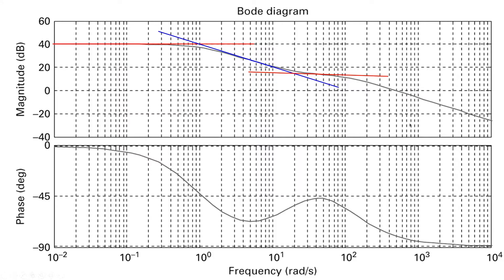For the next break frequency, there is a region with a very constant slope where a tangent line is easy to place. The blue and red lines make a new intersection point at approximately 10 to the power 2, which is 100 radians per second. This is again a pole — it causes the gain to decrease and the phase to become more negative, confirmed by the phase plot.